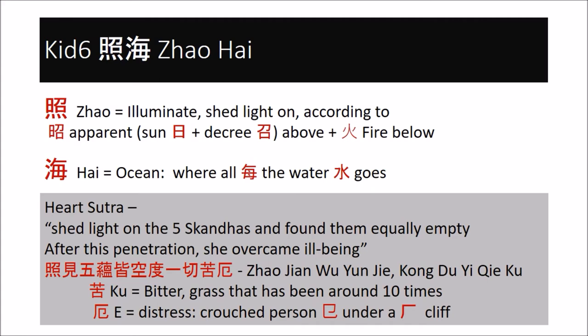Kidney six and the character zhao — to illuminate — has both the sun and fire in it. Zhao is to summon, to order the sun, and then to put light to it, that is to illuminate. This is a bit similar to bladder one, Jingming, the bright, the understanding eyes. Ming — bright or understanding — is composed of the sun and the moon, a double light, summoning all available light sources. The yin qiao channel starts with kidney six shedding light, summoning the sun and the fire, and ends at bladder one, where the sun and the moon offer brightness, clarity, and understanding. Yin qiao is considered to be the meditation or contemplation channel. Kidney six, to shed light on the ocean — the ocean of life — is how we start our meditation journey, and it comes to fruition when we gain clear understanding or bright eyes, as in bladder one.